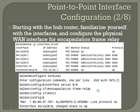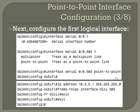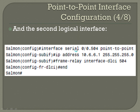You see the line protocol go up. Next, configure the first logical sub-interface. From global configuration mode, interface serial 0/0.503 — using the recommended option of matching the sub-interface number to the DLCI for clarity — followed by the point-to-point option. Add an IP address: 10.5.5.1 255.255.255.0, then frame-relay interface-dlci 503. Exit back to global config mode and set up the second logical interface: interface serial 0/0.504, point-to-point, IP address 10.6.6.1 255.255.255.0, frame-relay interface-dlci 504, and end.